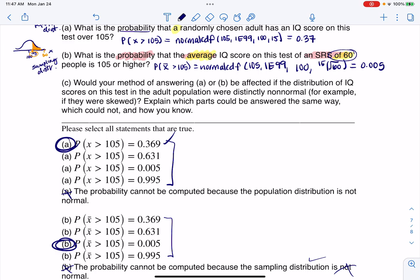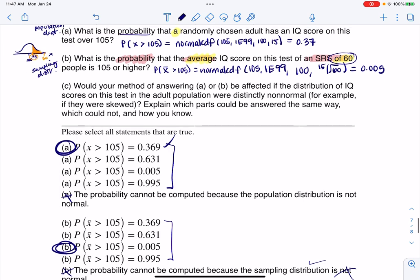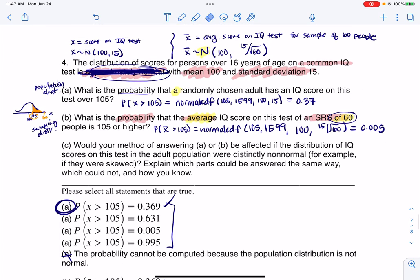So it says, would your method of answering A or B be affected if the distribution of IQ scores on this test in the adult population were distinctly non-normal? Explain which parts could be answered the same way, which could not, and how you know. So now we're going to actually run through.